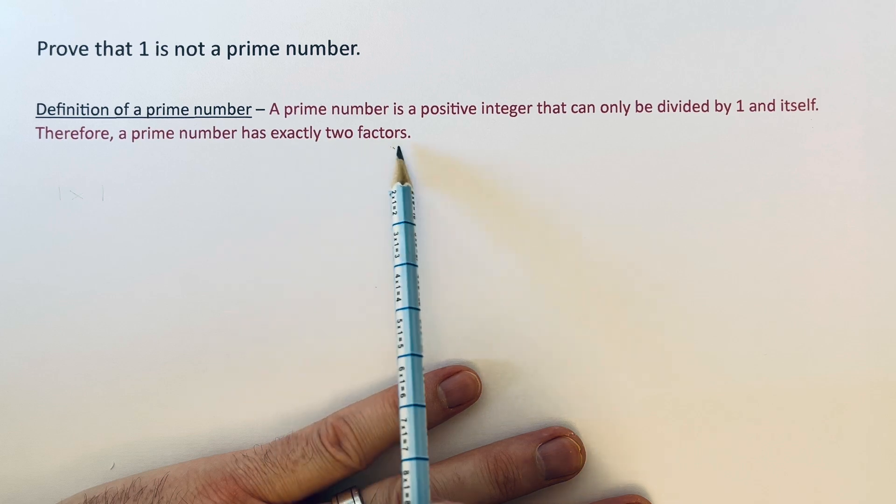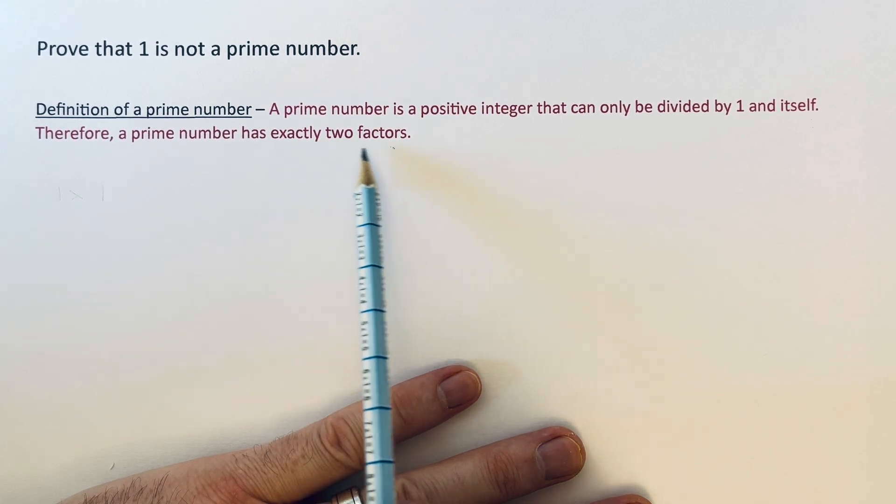This is the main bit you'll need to consider when you're proving that 1 is not a prime number. So it must have two factors exactly.